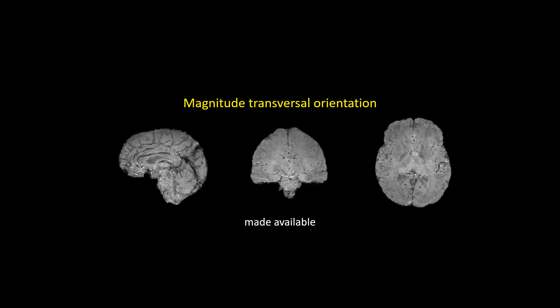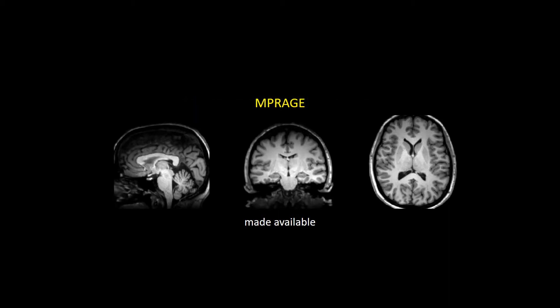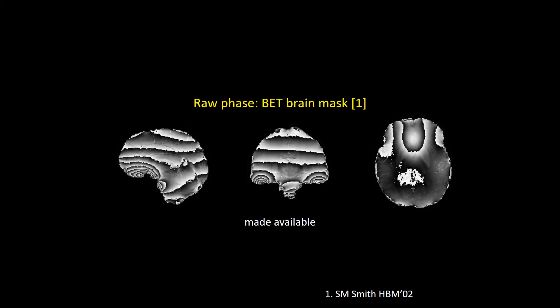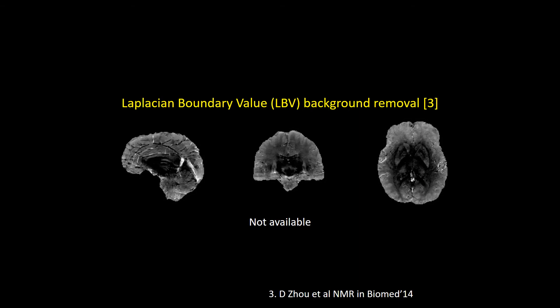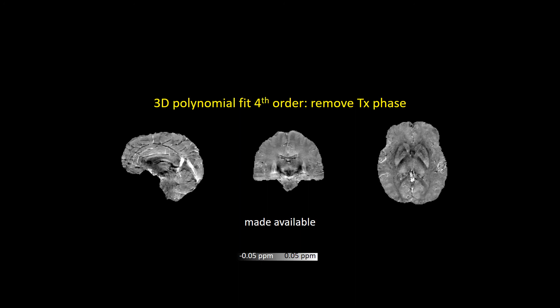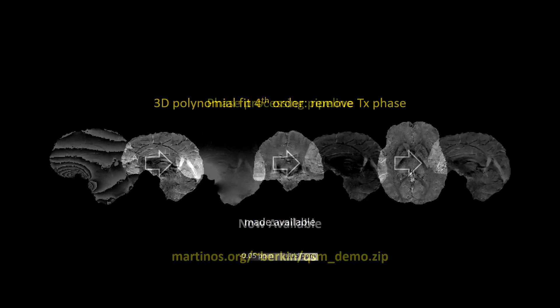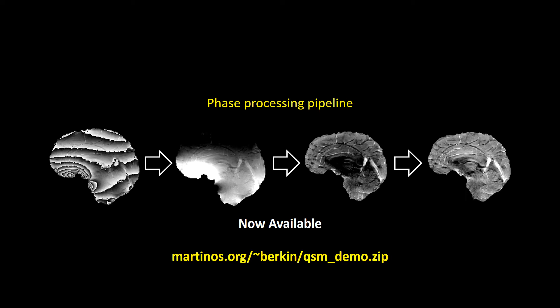Let's take a look at the challenge dataset. We provided GRE magnitude data to serve as structural priors, and also made an MPM contrast available if needed. The raw phase data after brain masking was also available, which made it possible for single-stack algorithms to be included. After unwrapping the phase data, LBV background filtering was applied to obtain foreground phase information. You might notice the central darkening effect due to B1-plus contributions — to mitigate these, we employed polynomial fitting to obtain the final tissue phase data made available to users. We also made the entire phase processing pipeline available, which might help inform future QSM applications.